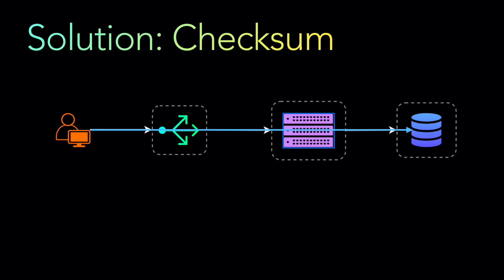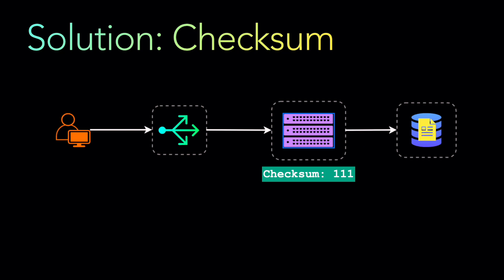The user requests the service to write some data to the database. At this point, the service calculates a checksum of the data — some value derived from the data — and writes that data along with the checksum to the database, storing them together. Now, if there is a fault in the database, network, or service, the data gets corrupted — the same situation as before — which means the checksum stored has now changed from what was originally written.